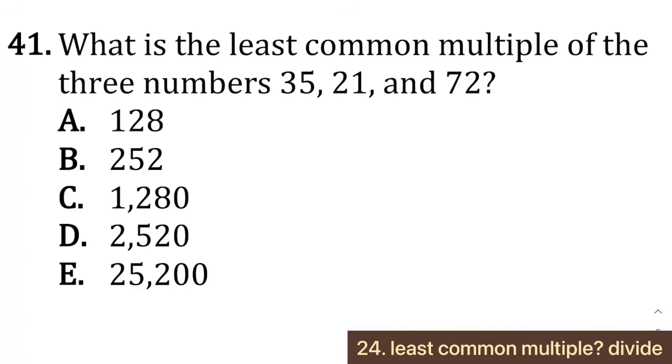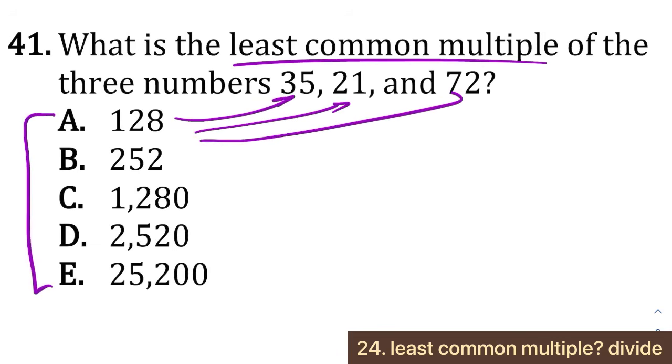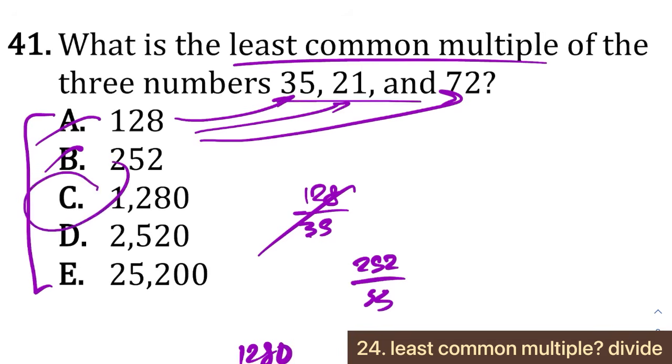Next strategy is how to approach least common multiple and greatest common factor questions. So with least common multiple questions, it's very simple. All you're looking for is what's the smallest answer option that's divisible by all three of these numbers. With greatest common factor questions, it's the other way around. So just in this case, this example right here with the LCM, you're just going to do 128 divided by 35, you see that doesn't work. 252 divided by 35, that doesn't work. So these two are out. 1280 divided by 35. I think that works. And you go ahead and check the rest of these. And if they all work, then this is your least common multiple. If that doesn't work, the next biggest number is. That's kind of the way you go through these. And again, the opposite isn't true of greatest common factor.